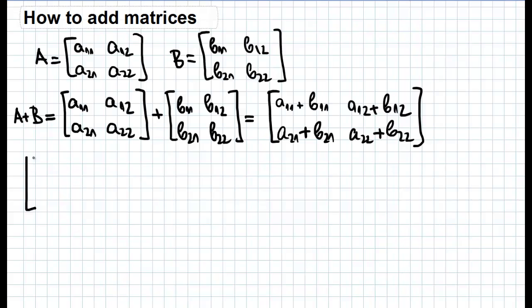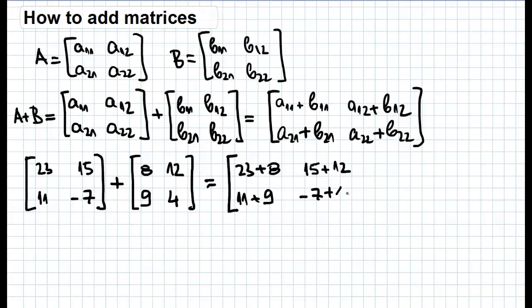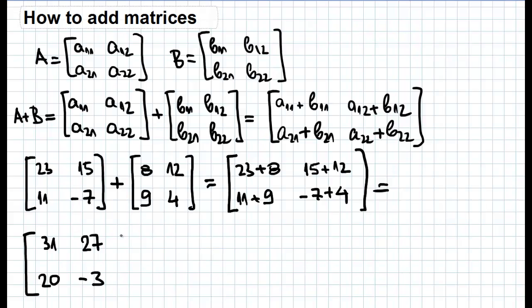Let the first matrix consist of the elements 23, 15, 11, and −7, and the second matrix consist of the elements 8, 12, 9, and 4. Now we need to add each element of the first matrix to the corresponding element of the second matrix: 23 plus 8, 15 plus 12, 11 plus 9, and −7 plus 4. This gives us the following matrix: 23 plus 8 is 31, 15 plus 12 is 27, 11 plus 9 is 20, and −7 plus 4 is −3. And that's all.